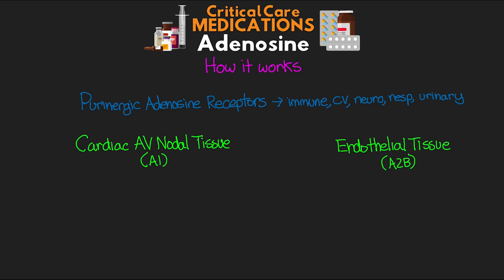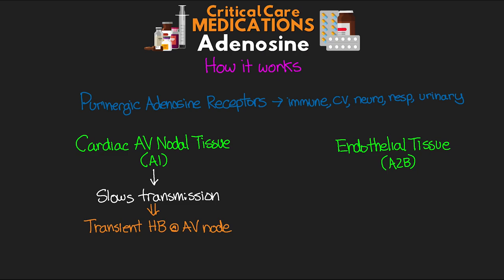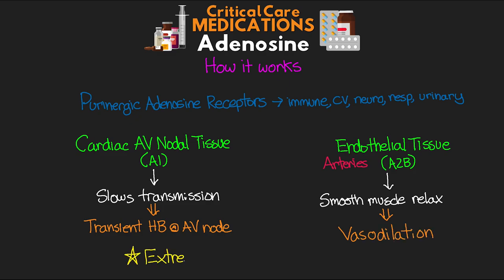In the cardiac AV nodal tissue, activating the A1 receptor actually slows the transmission of impulses. It does this by forcing potassium out of the cells and inhibiting the associated calcium influx, causing a transient heart block at the AV node. In the endothelial tissue — specifically of arteries — activating the A2B receptors causes relaxation of smooth muscle, leading to vasodilation. One other really important thing to know: adenosine has an extremely short half-life of only about 10 seconds.